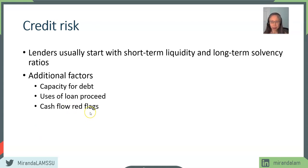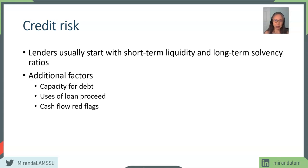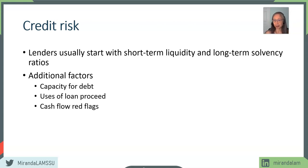Some examples of red flags include growth in accounts receivable that exceeds the growth in sales. Unless there is an intentional shift from cash sales to credit sales, when accounts receivable is growing but sales is not growing as fast, that means the company is having problems collecting from customers. Similarly, when growth in accounts payable exceeds growth in inventory, that's a signal the company is stretching its credit extension. By looking at the statement of cash flows and comparing it to changes in the financial statements, we can look for some of these red flags.